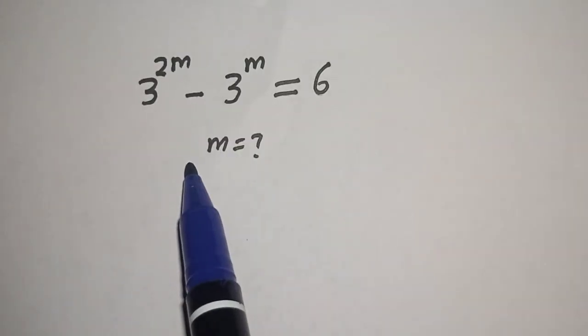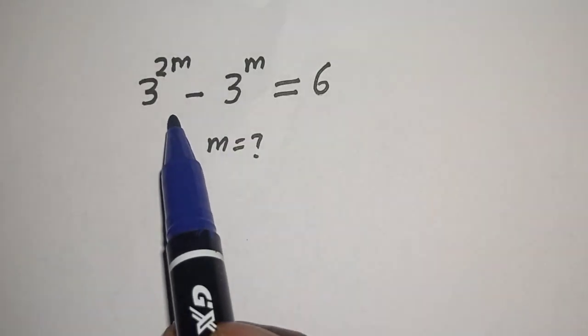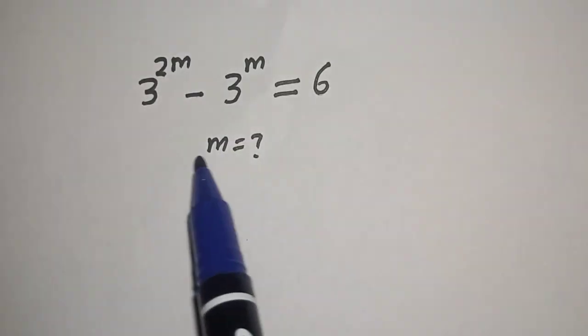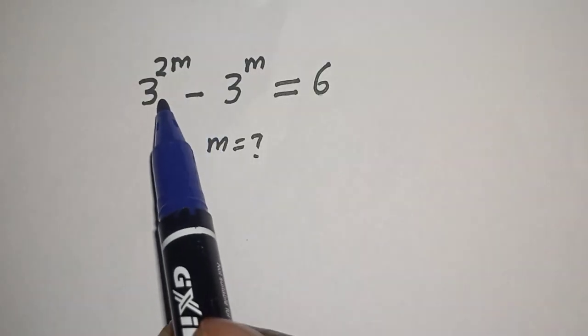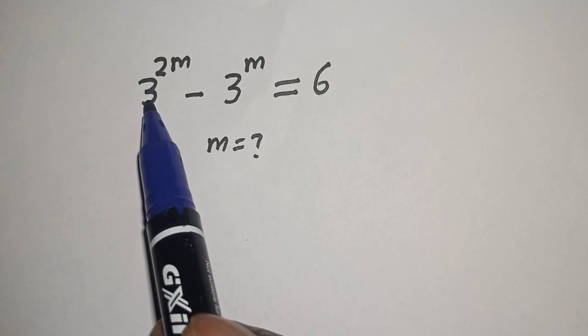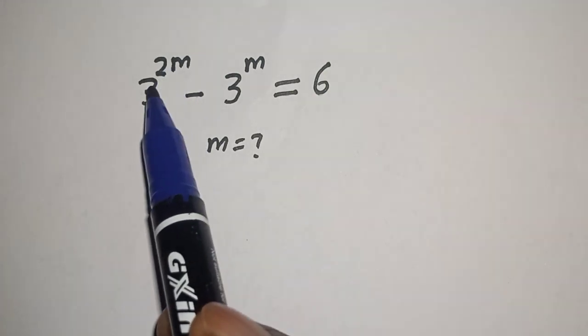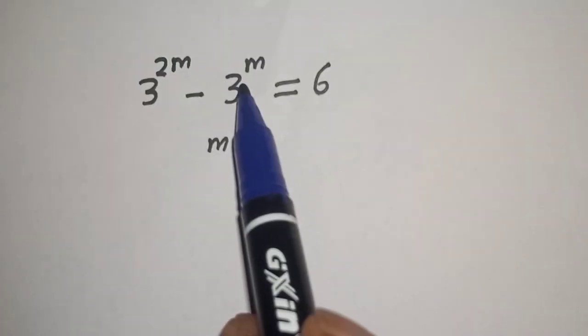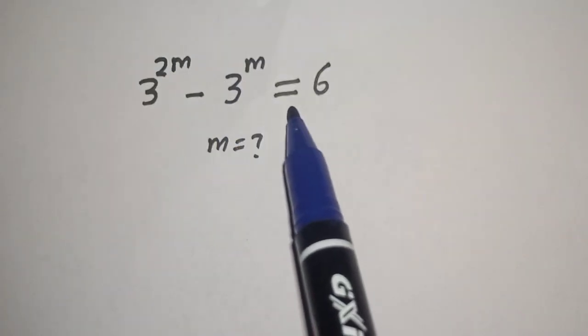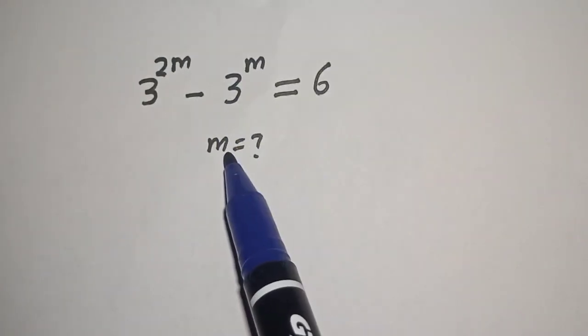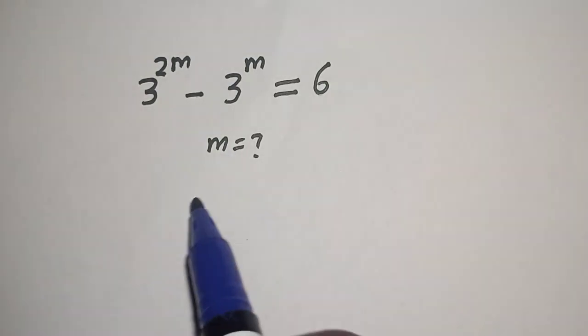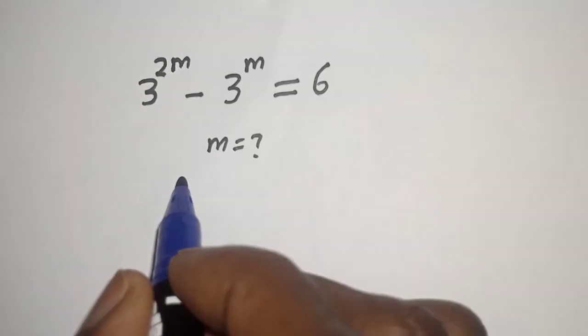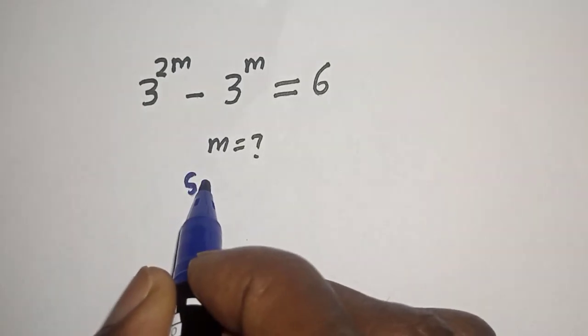Hello, welcome to Magis. In this class, we want to find the value of m from this given equation: 3 raised to power 2m minus 3 raised to power m is equal to 6.